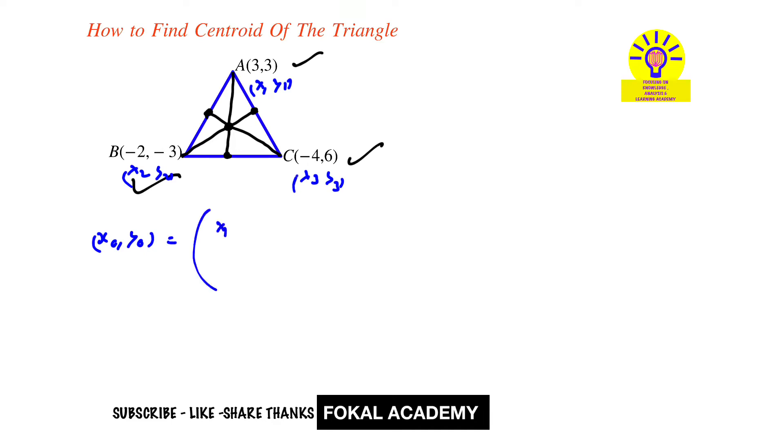Now if you want x₀, so x₁ plus x₂ plus x₃ by 3, comma y₁ plus y₂ plus y₃ by 3. This is the formula for finding the centroid.